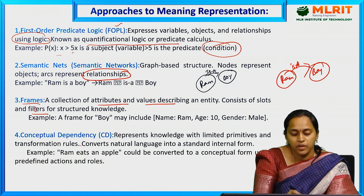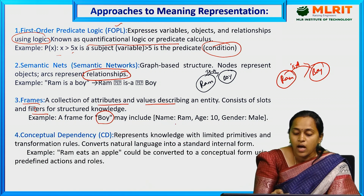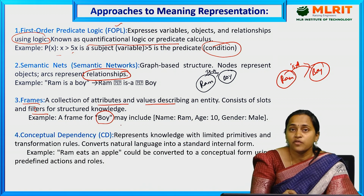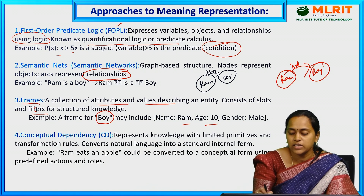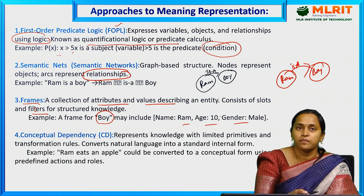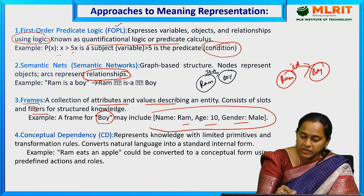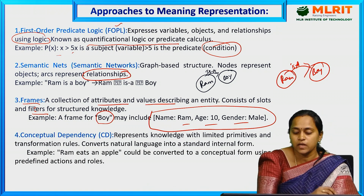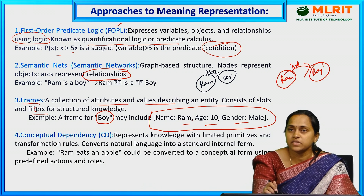Next, frames — a collection of attributes and values describing an entity, consisting of slots and fillers for structured knowledge. For example, a frame for 'boy' may include slots for name, age, and gender. This frame contains the subject, object, name, and states.